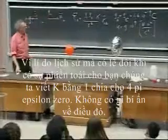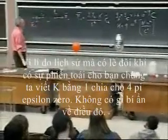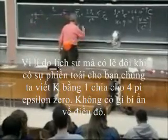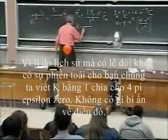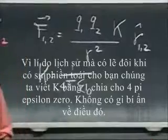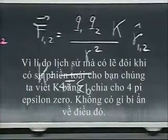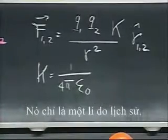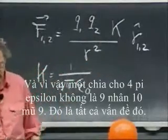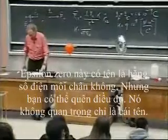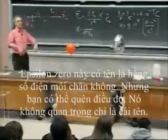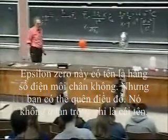For historical reasons, which may at times be a pain in the neck for you, we write K as one divided by four pi epsilon-zero. There is nothing magic about that — it's just a historical reason. And so one divided by four pi epsilon-zero equals 9 times 10 to the ninth. This epsilon-zero has a name: it's called the permittivity of free space. But you can forget about that name — it's not important.